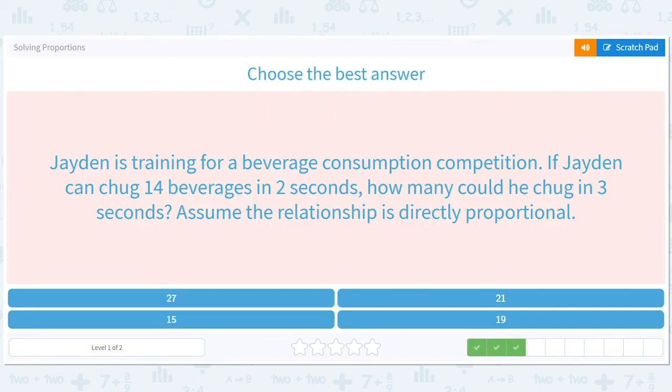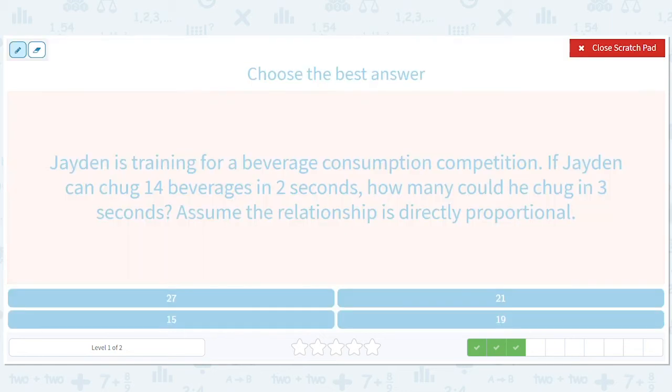Jaden is training for a beverage consumption competition. If Jaden can chug 14 beverages in two seconds, how many could he chug in three seconds? So this one is a good one for an equation, because it's kind of like two, three. It's a weird fraction. So 14 beverages in two seconds. How many? In three seconds. How many is x? In three seconds.